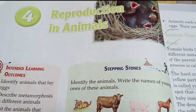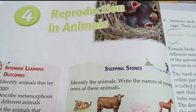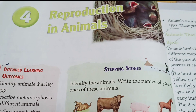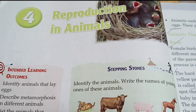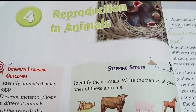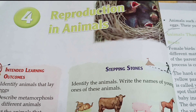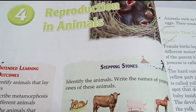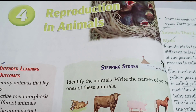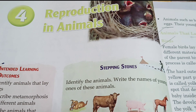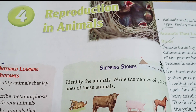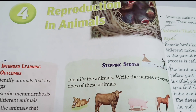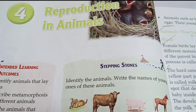Hello students, welcome to West Bengal English Video Guide. Today we are going to solve chapter 4 from class 4 science: Reproduction in Animals. This is from the CBSE board. We will solve the exercise question answers and also the inside question answers from the chapter. Don't skip the video, watch it till the end.